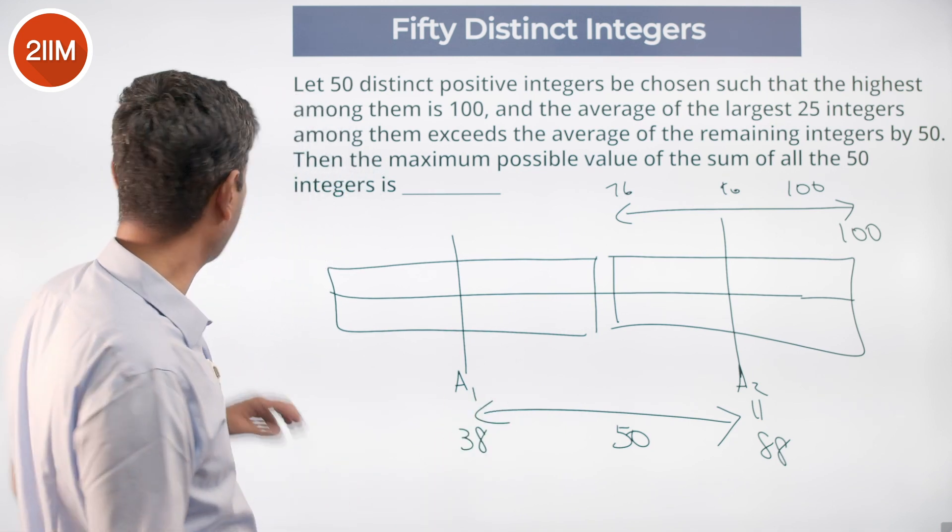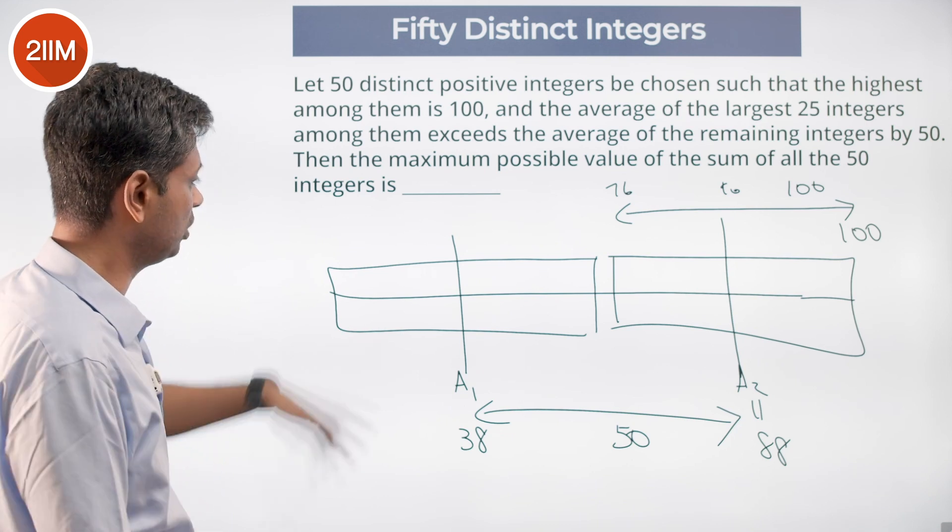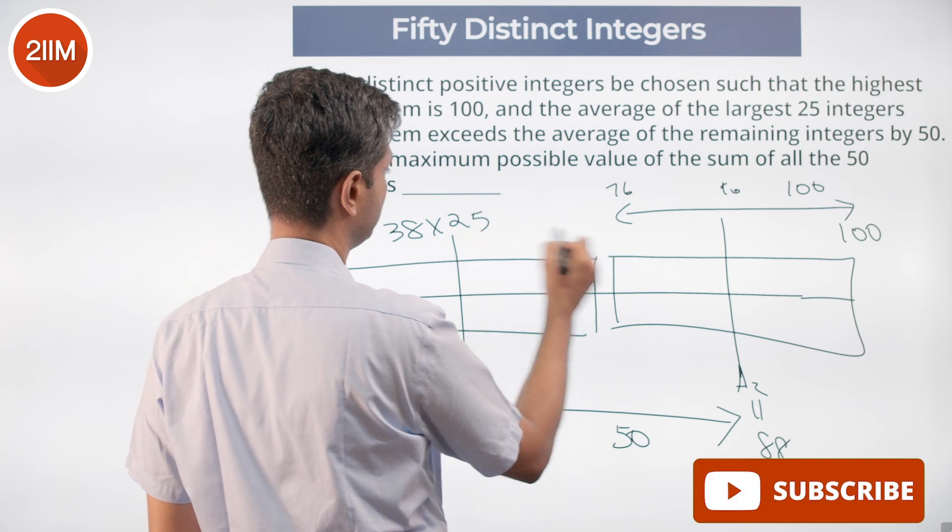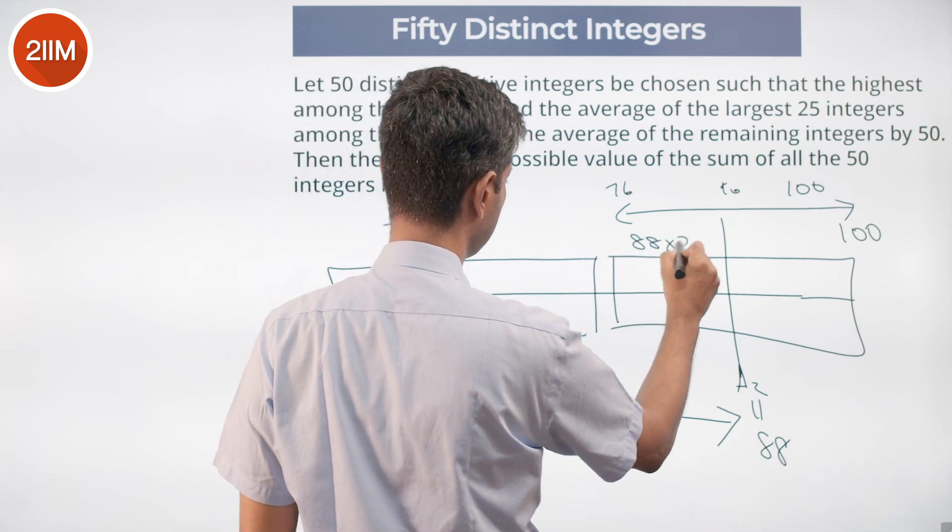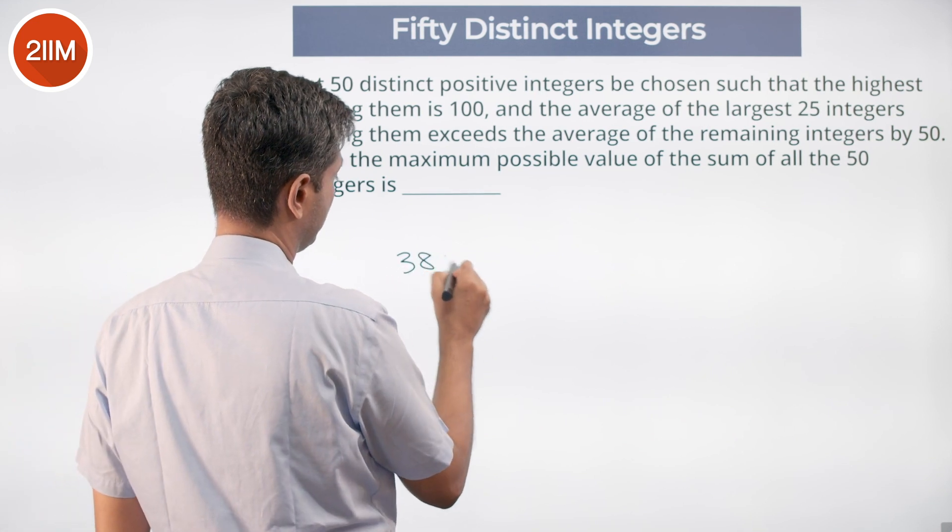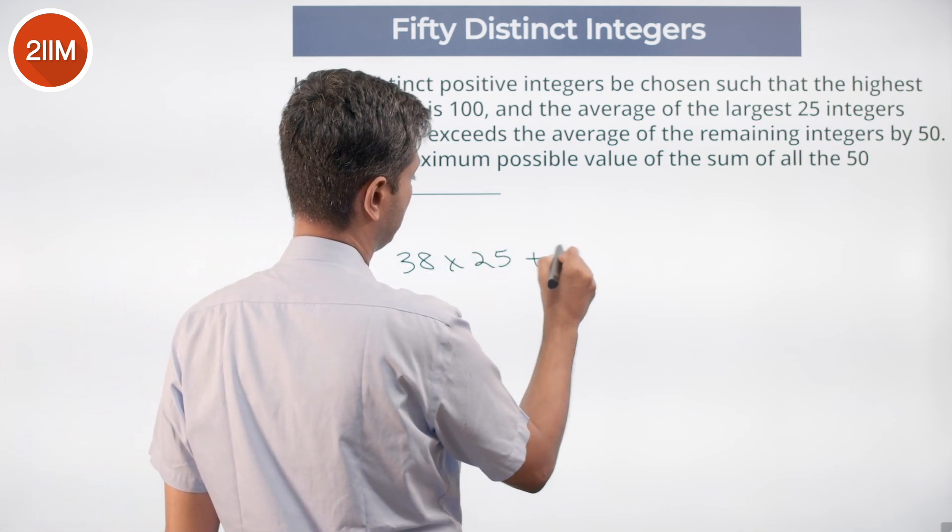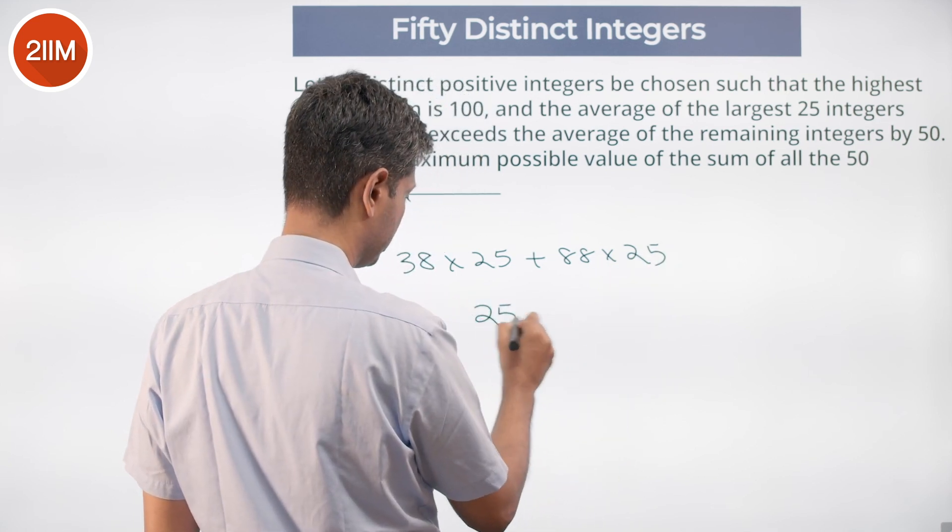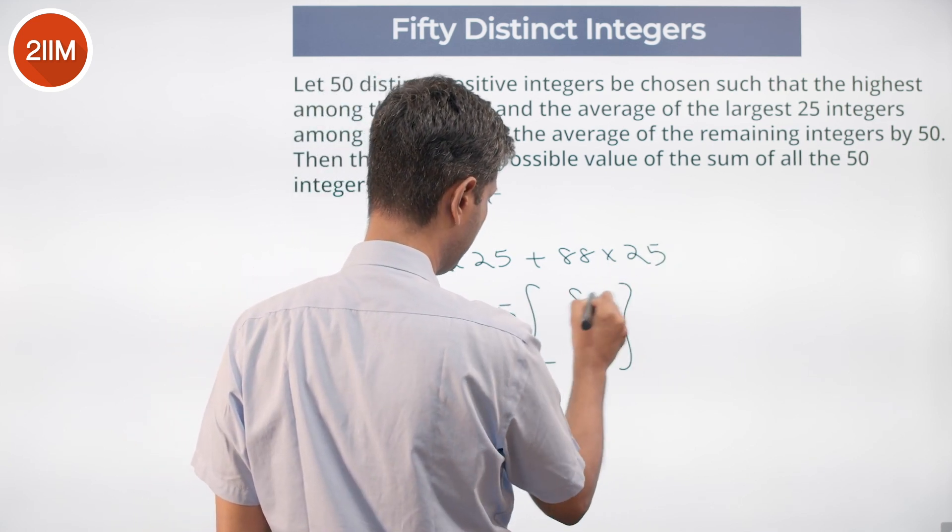What is the overall average or what is the sum of all this? Sum of all this is 38 into 25, sum of all this is 88 into 25, or the total is 38 into 25 plus 88 into 25, which is 88 plus 38.